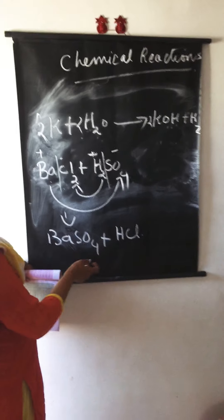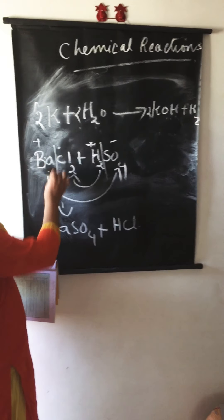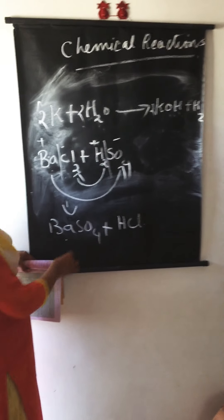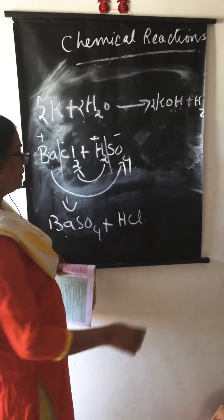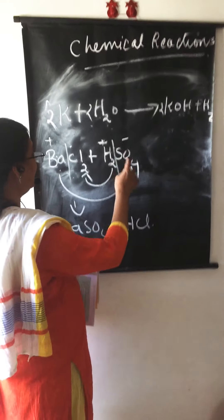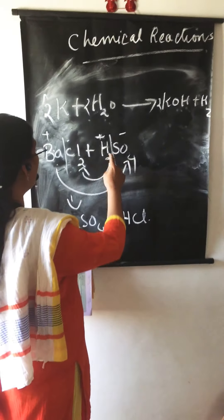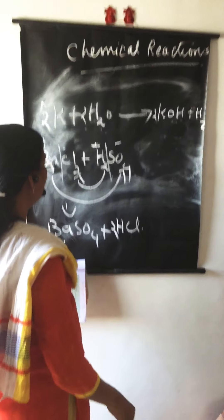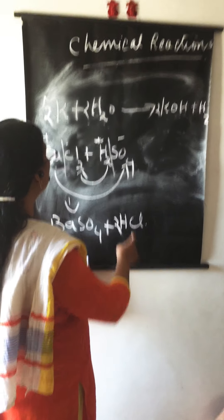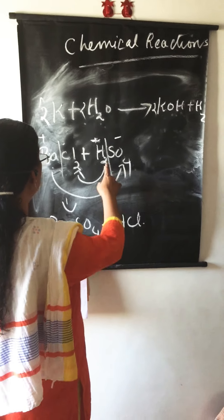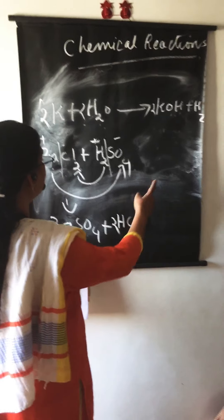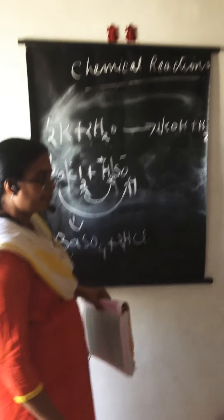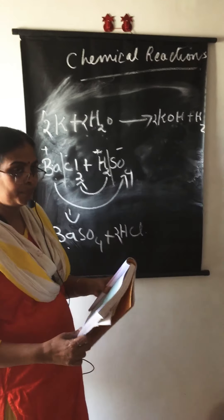Now balance this equation. Barium and barium — balanced. There are two hydrogen atoms on the left, so put 2 in front of HCl. Chlorine is balanced, sulfate is balanced. The equation is balanced: BaCl2 + H2SO4 → BaSO4 + 2HCl.